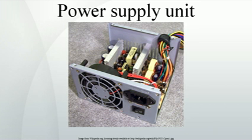Original IBM power supplies for the PC, Model 5150, XT and AT included a line voltage power switch that extended through the side of the computer case. In a common variant found in tower cases, the line voltage switch was connected to the power supply with a short cable, allowing it to be mounted apart from the power supply.